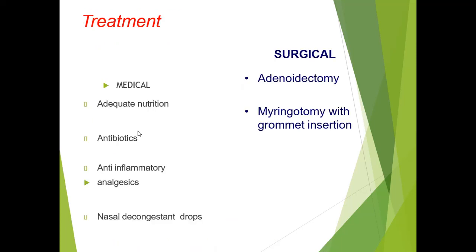Medical treatment includes adequate nutrition, antibiotics, anti-inflammatory agents, analgesics, and nasal decongestant drops. But mostly, if the adenoid is filling more than two-thirds of the nasopharyngeal space, surgery is needed. The surgery is called adenoidectomy. If the patient also has hearing loss due to otitis media with effusion, myringotomy and grommet insertion are performed along with the adenoidectomy.